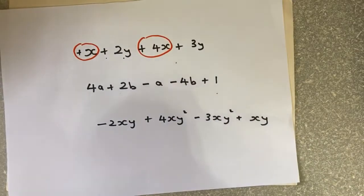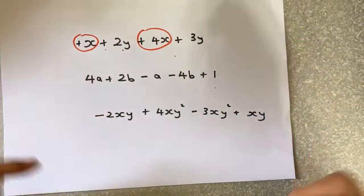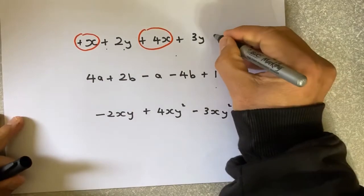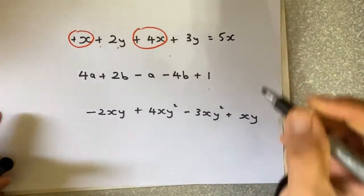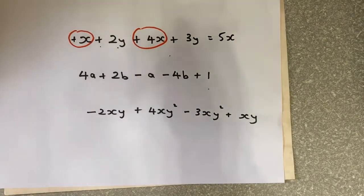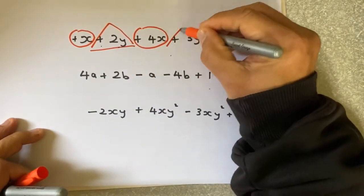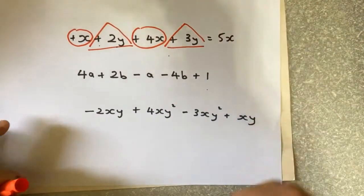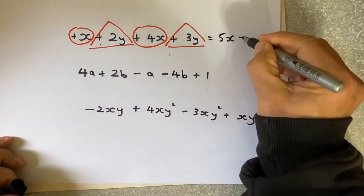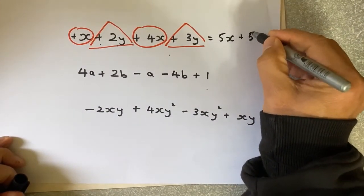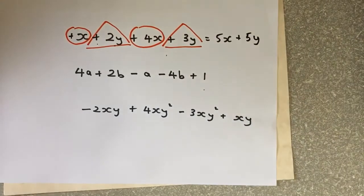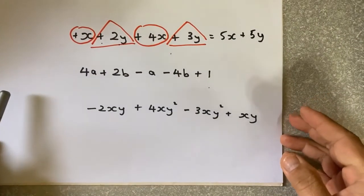So X plus X plus 4X. When you add them up, you get 4X plus 1X, which equals 5X. The other pairing is plus 2Y and plus 3Y. They're the same family, so 2 plus 3 gives you 5Y. That is how you do like term addition.